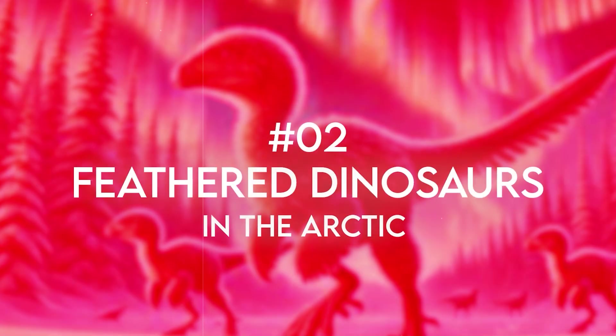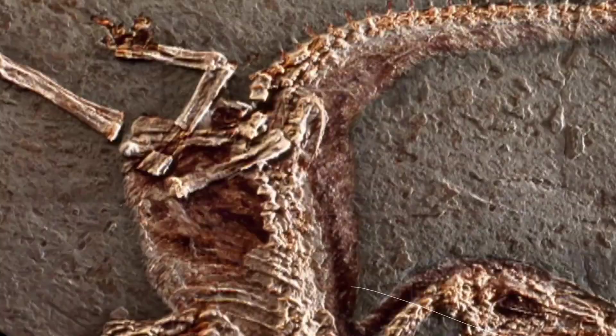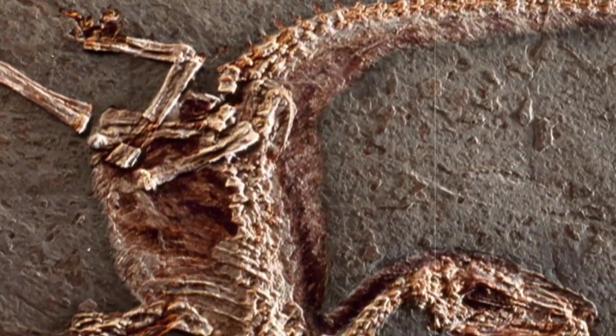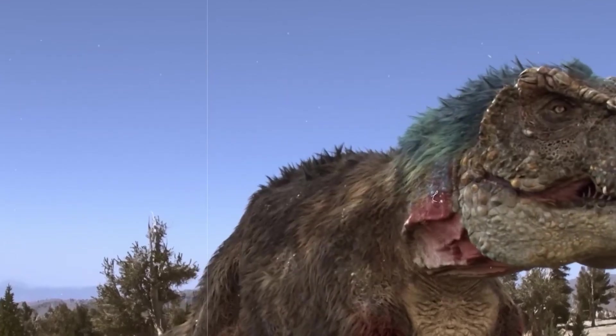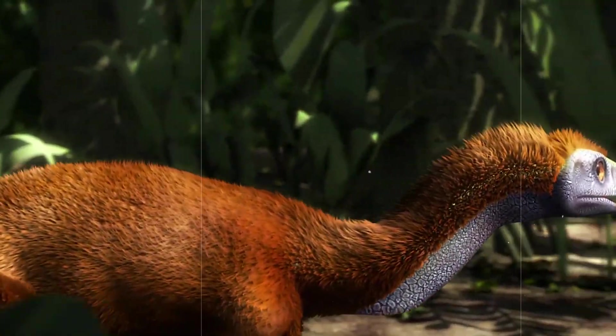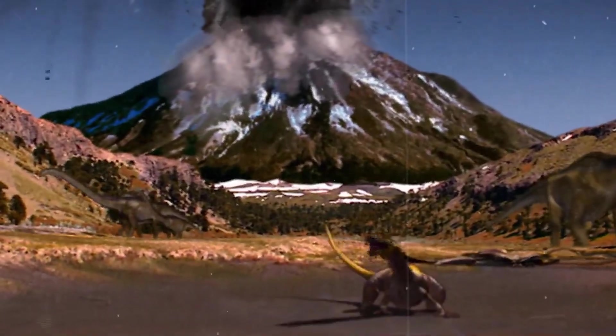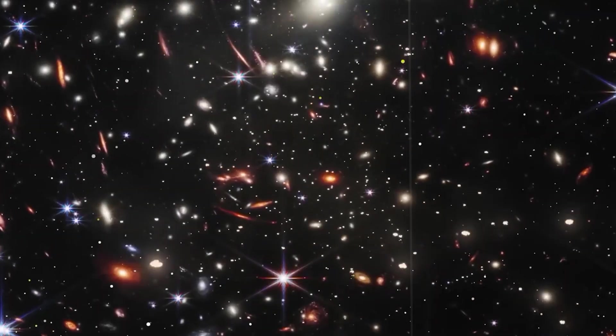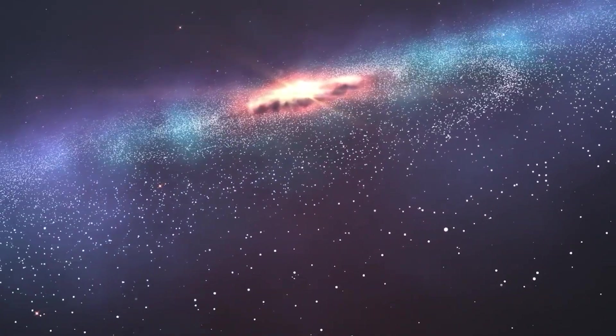Number 2. Feathered dinosaurs in the Arctic. Do you believe that dinosaurs exclusively lived in warm, tropical regions? Rethink your assumptions. Amazing fossil finds in Alaska show that certain dinosaurs possessed feathers to withstand the cold, in addition to living in the Arctic. Far from the lush settings we usually thought of, these ancient species faced months of darkness and severe weather. And speaking of cosmic chills, our next finding comes straight from the heart of antimatter.